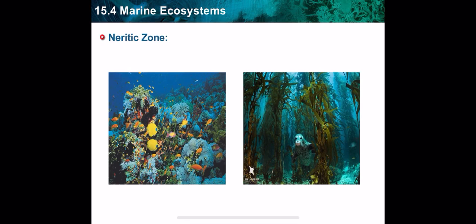In the neuritic zone we can also find coral reefs. Coral reefs are animals that live in a mutualistic relationship with algae — meaning both organisms benefit. Corals get nutrients from algae, and algae also inhabit the corals. Coral reefs are found in warm areas, in the tropical climatic zone.